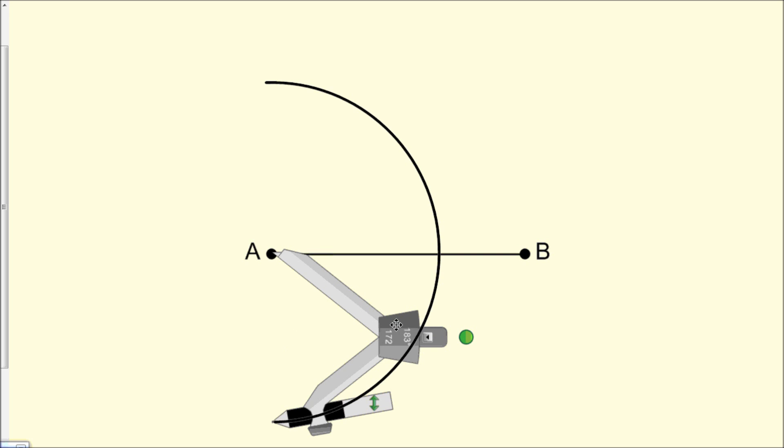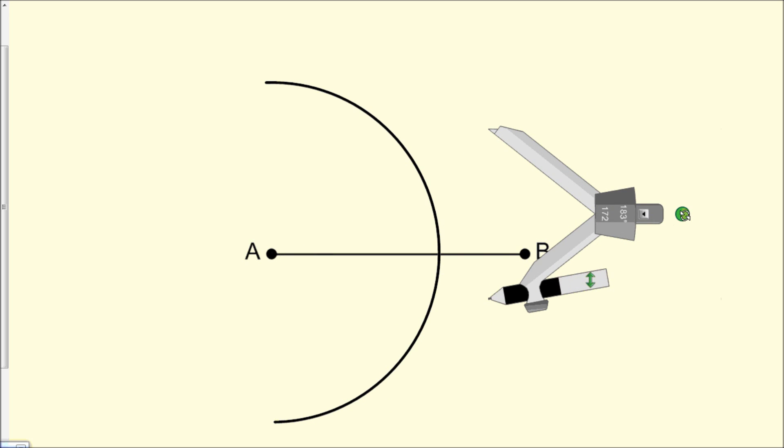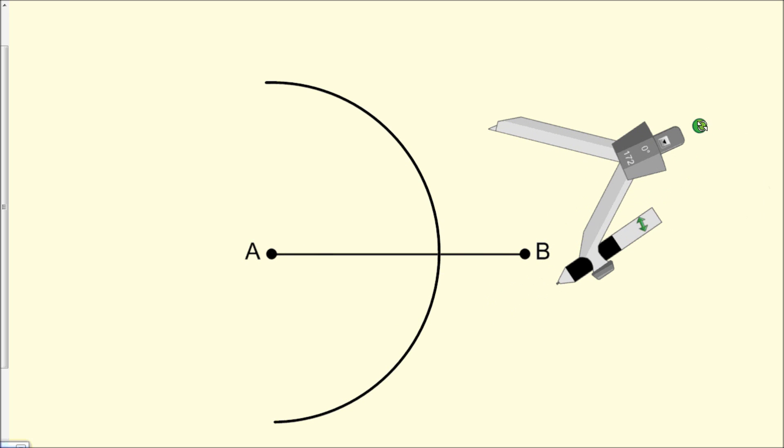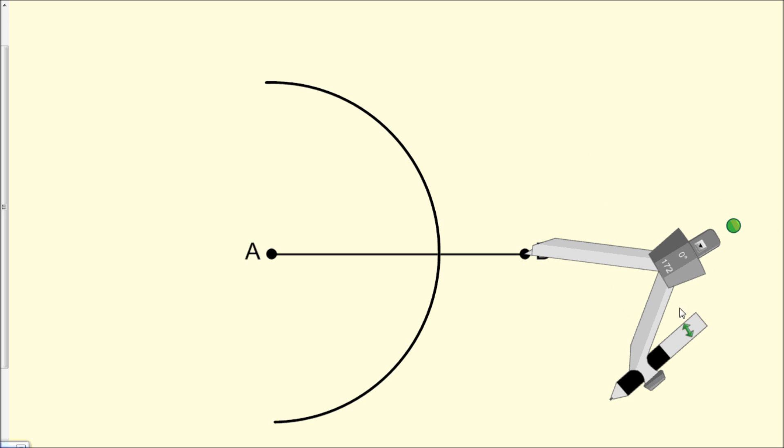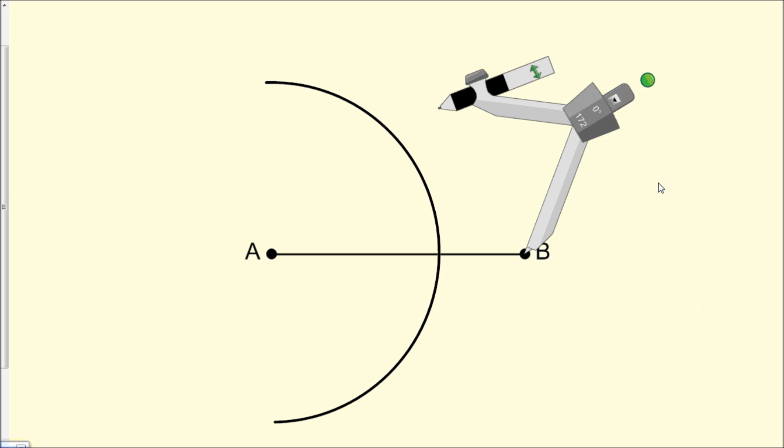Next, we move the compass to point B and do the same thing. We keep the length of the compass exactly the same. It's crucial that you do not change the length of the compass for this step.